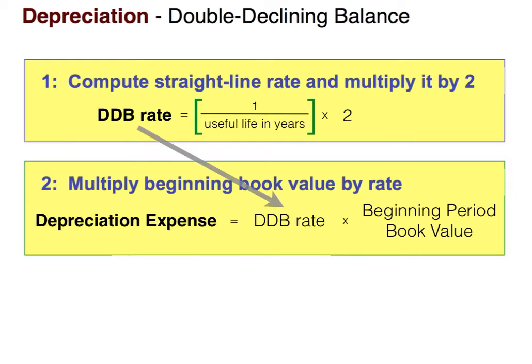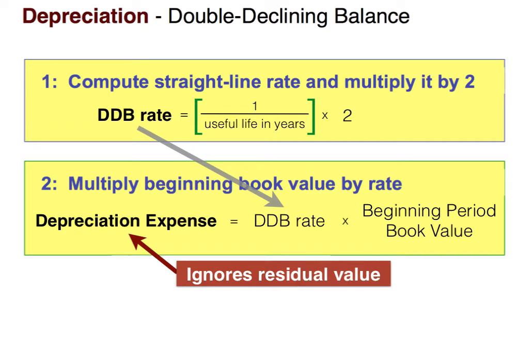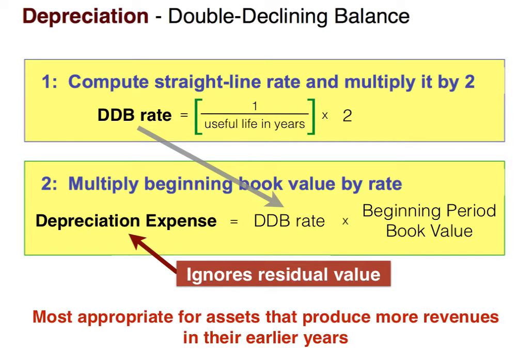Once you have the rate calculated, you use it to calculate depreciation expense by multiplying the double declining balance rate times the beginning period book value. Recall that with straight line we multiplied the rate times the cost; here we use beginning period book value. Also note that double declining balance ignores residual value, and it is most appropriate for assets that produce the most revenues in the earlier years of their life, since those years will have the most depreciation expense.